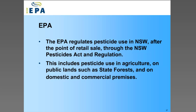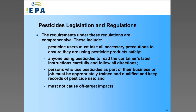What does the EPA do? The EPA regulates pesticide use in New South Wales after the point of retail sale through the Pesticides Act and Regulation. This applies to pesticide use in agriculture, on public lands such as state forests, and on domestic and commercial premises — pretty well anywhere pesticides are applied in New South Wales. The key provisions ensure that pesticide users must take all necessary precautions to use products safely, must read and follow label instructions carefully, must be appropriately trained and qualified if using pesticides as part of their business or occupation, and must keep records of their pesticide use.